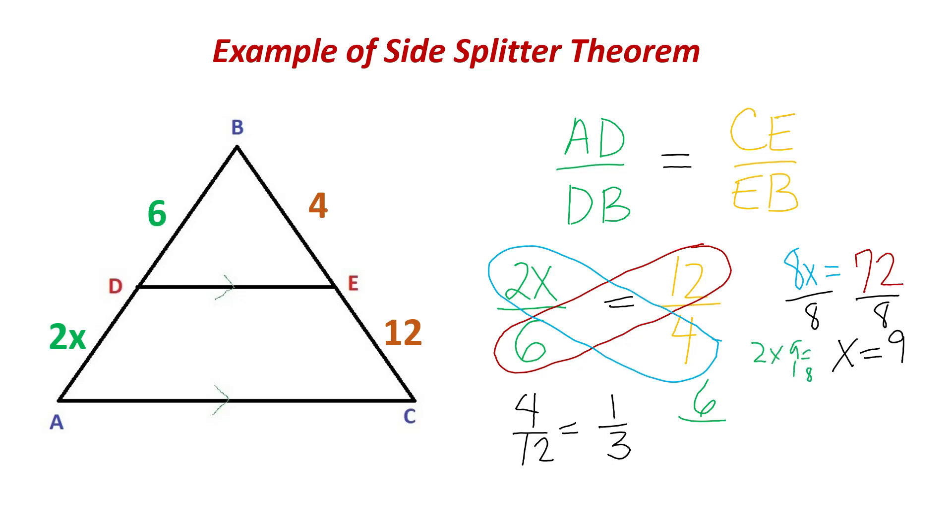So it would be 6 over 18. And if I simplify that, that is also 1 third. So they are proportional. So X is equal to 9. And I substitute it back into the equation. And I find that both sides are proportional.